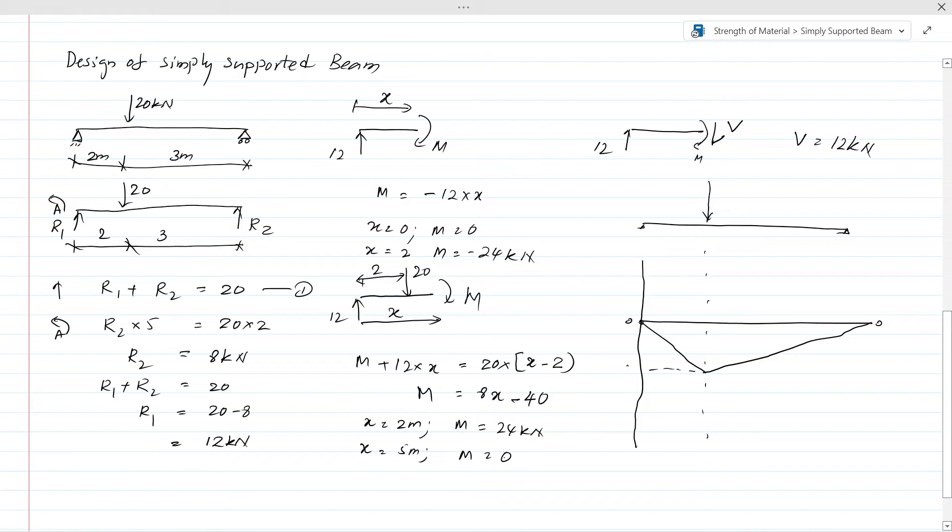Now for the shear force diagram. The shear force is 12kN before the point load. At the point load of 20kN, it drops by 20kN to minus 8kN. So we have 12kN on one side and minus 8kN on the other side.